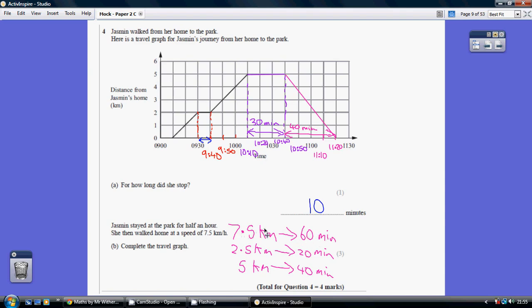If we divide this by 3, we get 2.5 kilometres being 20 minutes. Divide by 3, divide by 3. And then, if we double this, we get that 5 kilometres takes 40 minutes.